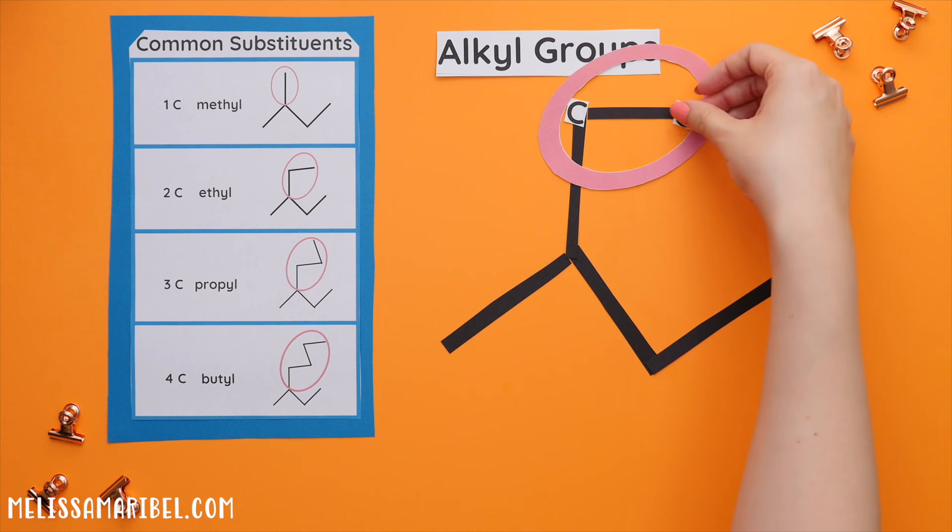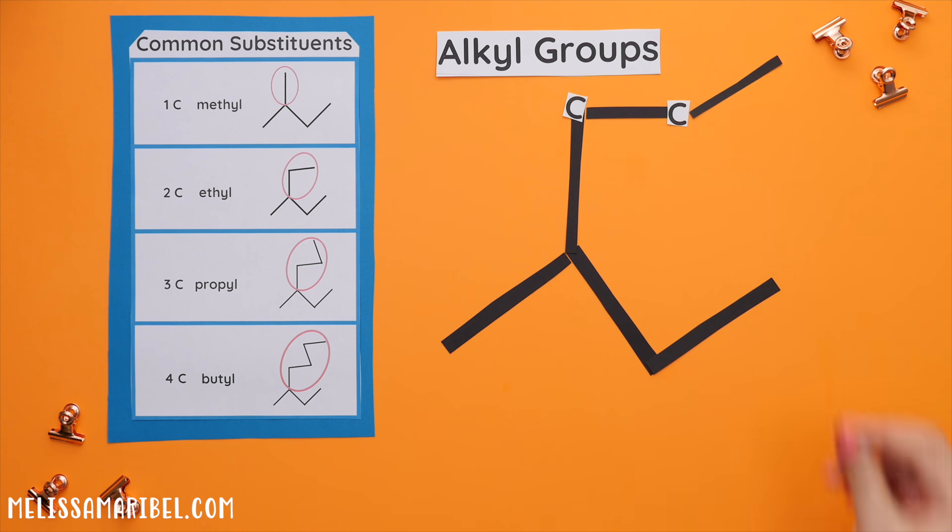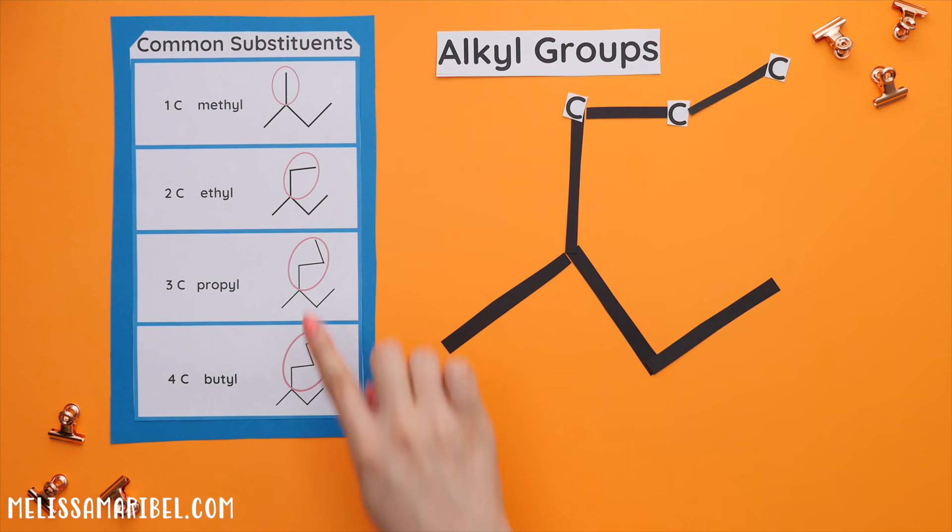Next is ethyl. This has two carbons. Then propyl has three carbons and butyl has four carbons.